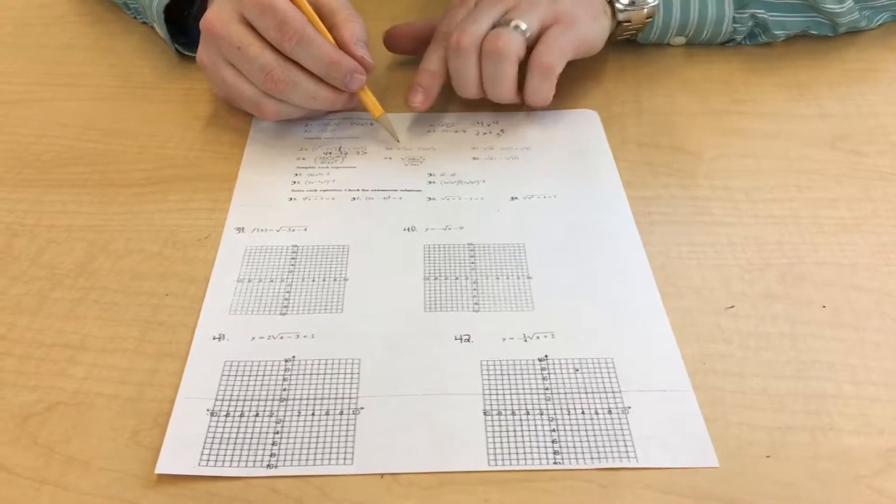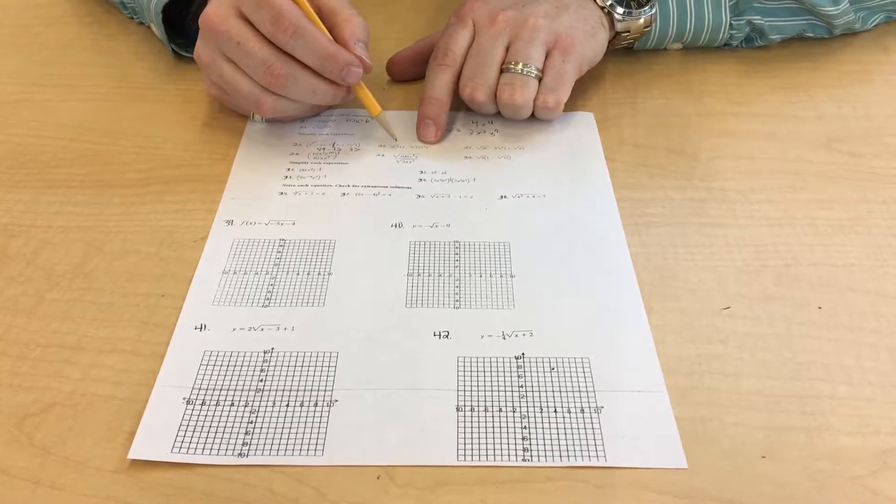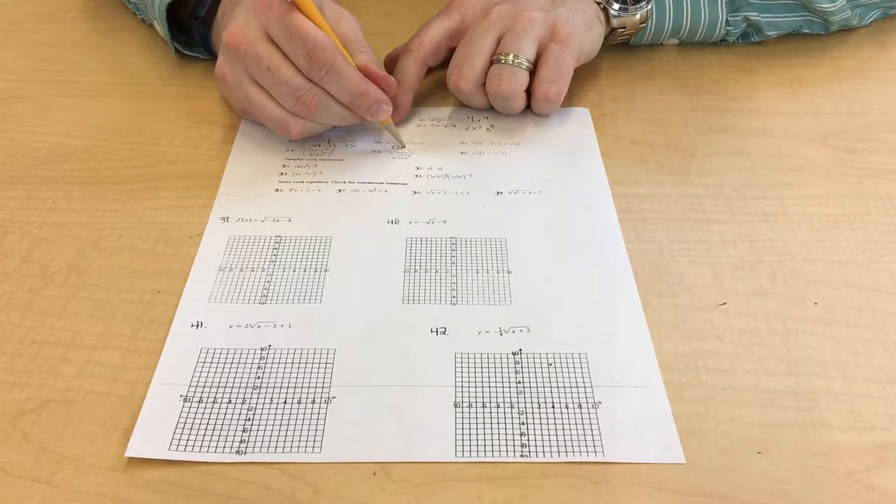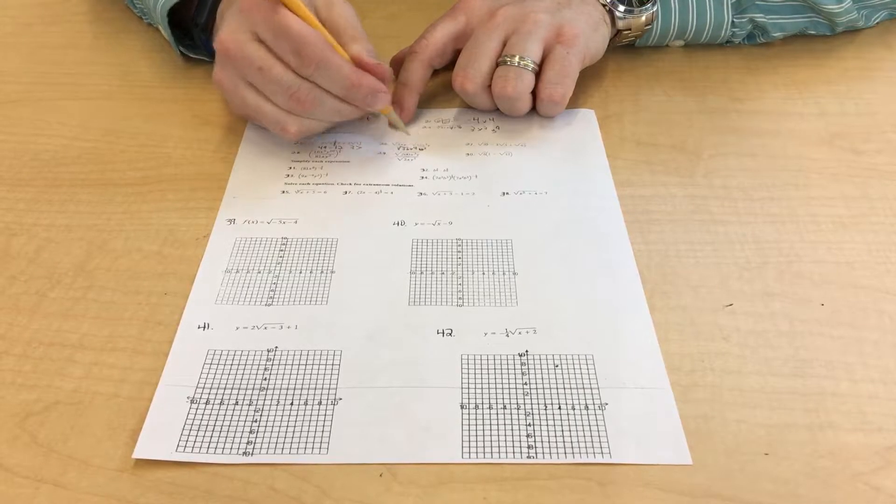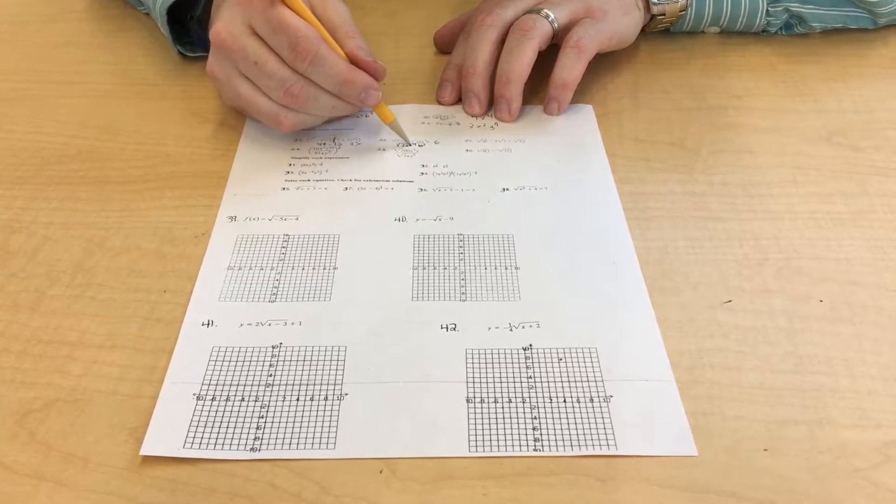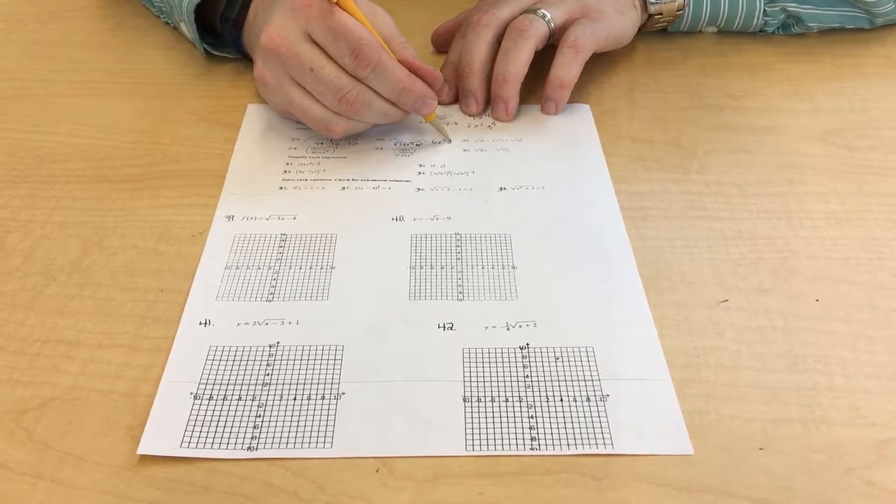On this one, this is what's inside times what's inside, what's outside times what's outside when you're multiplying them. So this is the square root of 36x to the 4th power y squared, which is just going to be the square root of 36 is 6. The square root of x to the 4th is x squared, and the square root of y squared is y.